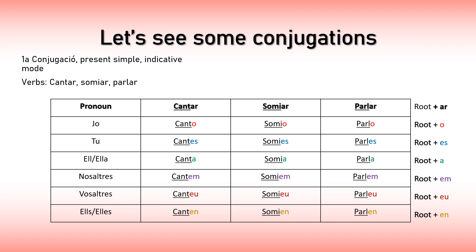This pattern is followed by the other two verbs as well because they are also regular. For jo you add the root and -o; for tu you add the root and -es, and so on. For irregular verbs, sometimes they coincide in some cases and may follow the pattern, but in some cases they don't, which is why they cannot be considered regular.